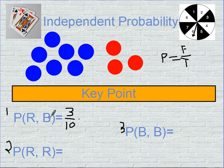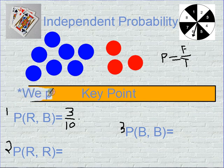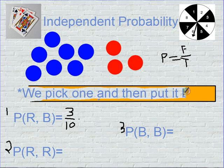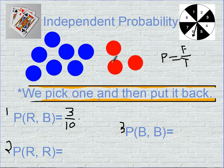Then we go to our second event, which is the probability of getting a blue marble. The key thing whenever we're doing this is that we always need to pick one and then put it back. Whenever we are doing independent probability, we pick something and then we put it back. So we still have a total of ten marbles, still have three reds, still have seven blue. The probability of getting a blue one is seven out of ten.